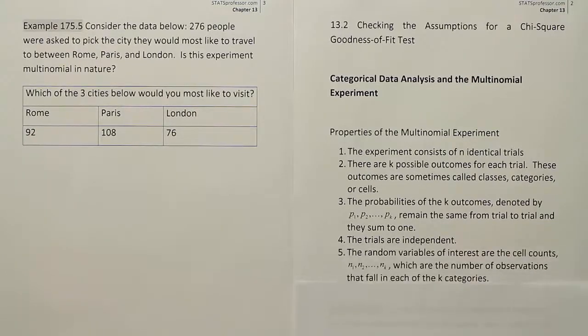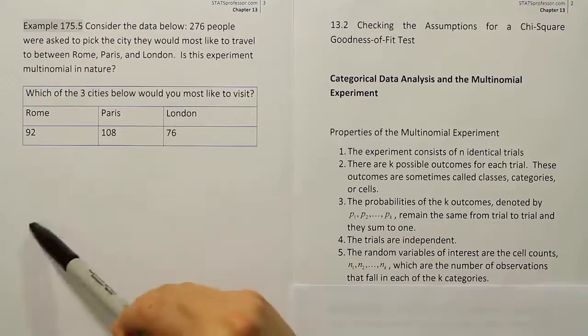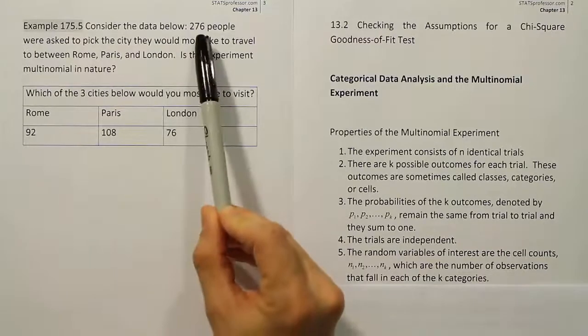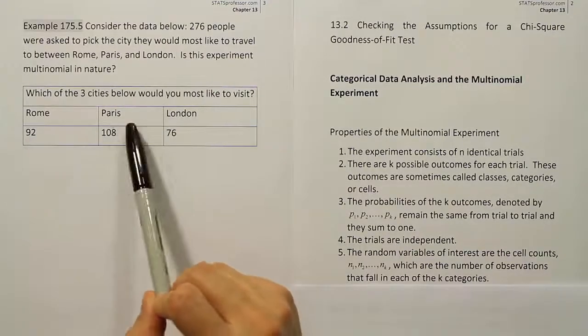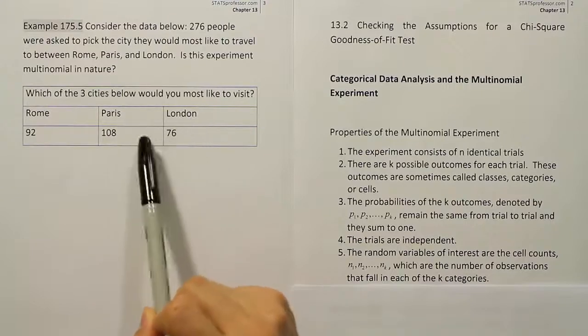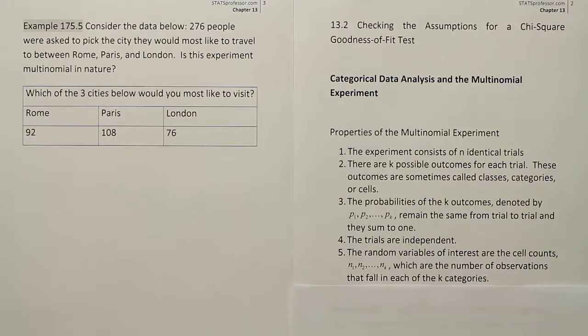All right, and then finally the last part here, part five, the random variable of interest is the cell counts and yes that's exactly what we're talking about. We want to know how many people of this group of 276 are going to say they want to go to Rome, how many people are going to say they want to go to Paris, how many people are going to say they'd like to go to London. So condition five is met as well.